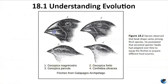Darwin observed that beak shape in finches differed based on what they ate. He postulated that the ancestral species' beak had adapted over time to equip finches to acquire different types of food. Peter and Rosemary Grant observed changes in beak shape distribution among the medium ground finch population on Daphne Major across generations, from 1978 through 1987. During a period of increased rainfall caused by El Niño, large hard seeds became harder to find, favoring small-billed birds. As a result, average bill size decreased in subsequent generations, then reversed when conditions returned to normal.